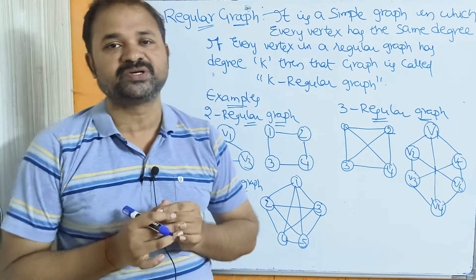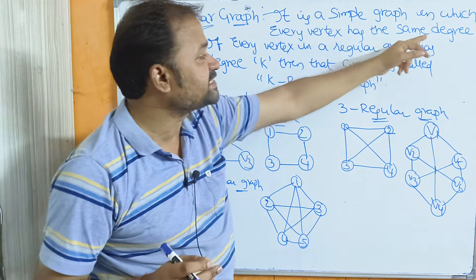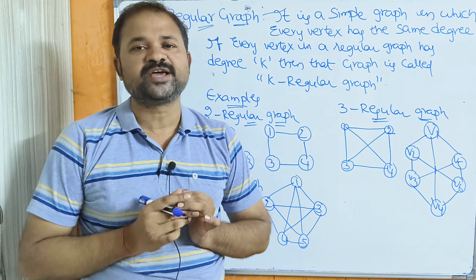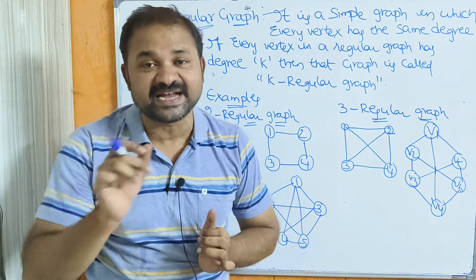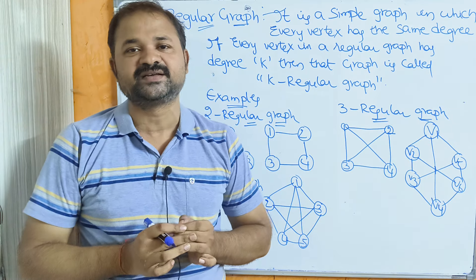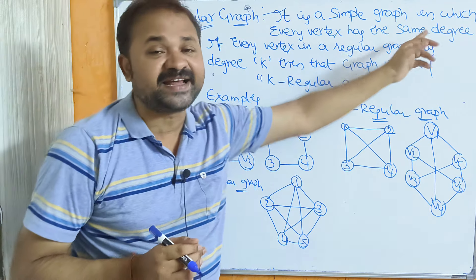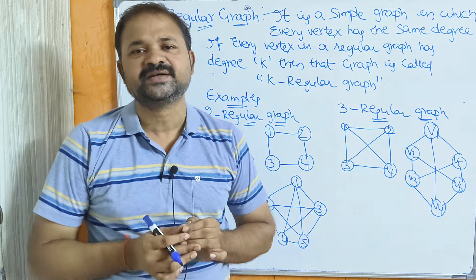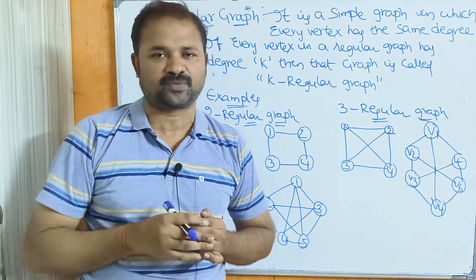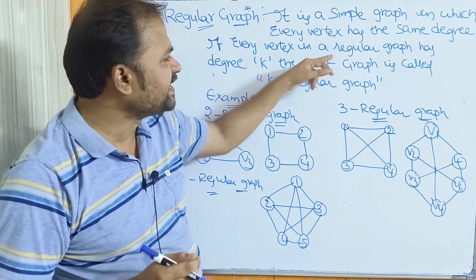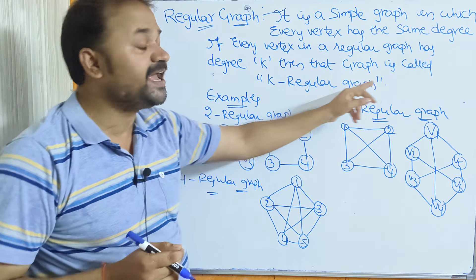First let us discuss about regular graph. It is a simple graph in which every vertex has the same degree. A simple graph does not contain any parallel edges as well as self loops, and every vertex has the same degree. If every vertex in a regular graph has degree k, then that graph is called a k-regular graph.